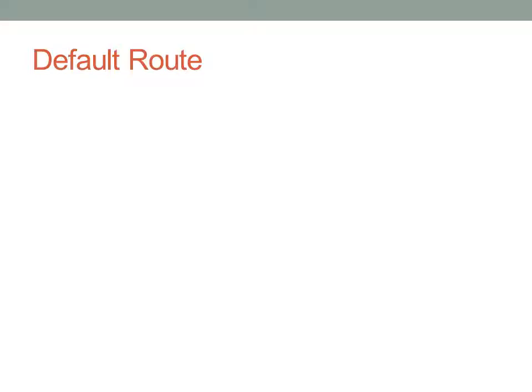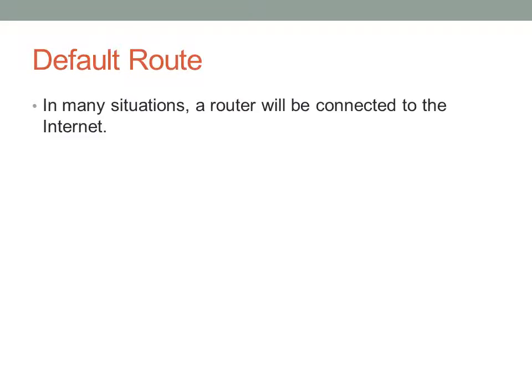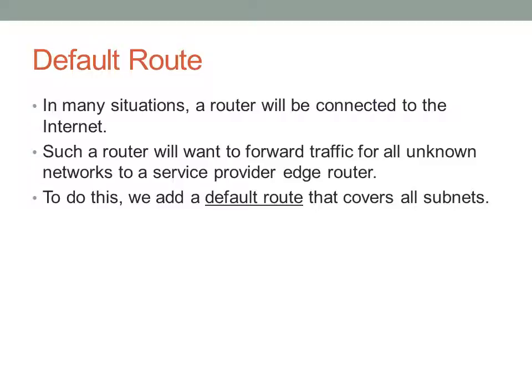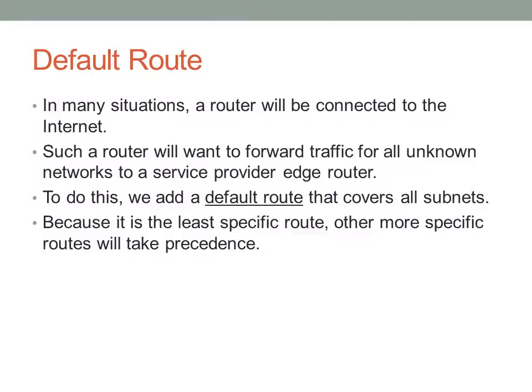There's a type of static route that's particularly interesting and very useful, especially where you have devices connected to the internet. In lots of situations you'll have a router connected to the internet, and you'll want to specify that all traffic for all unknown subnets goes to the ISP to be routed out. Such a router will need to forward that traffic to a service provider edge router. To do this, we add a default route that covers all subnets - this is going to be the least specific route in your routing table. We're not going to specify a subnet mask - we're going to specify 0.0.0.0, and for subnet mask also all zeros. If there is a more specific route in the routing table it will take that, otherwise it will take the default route.